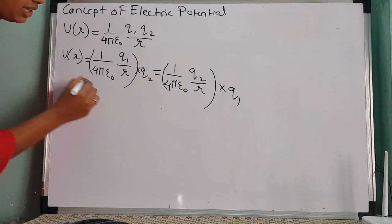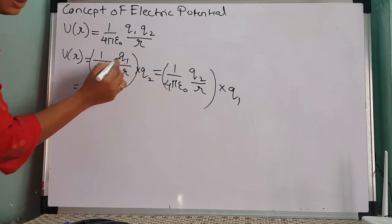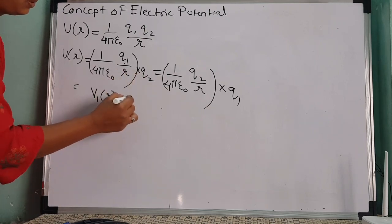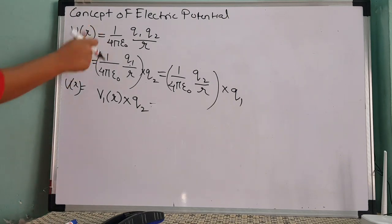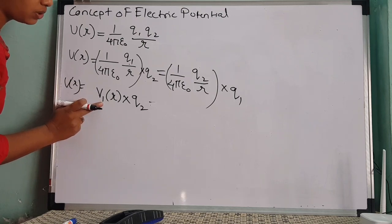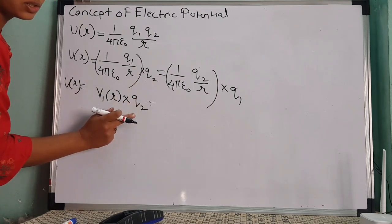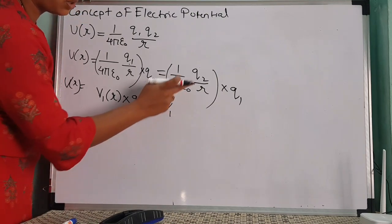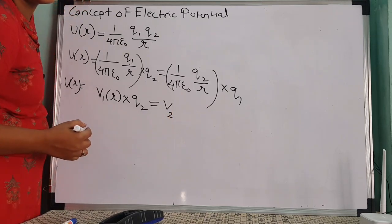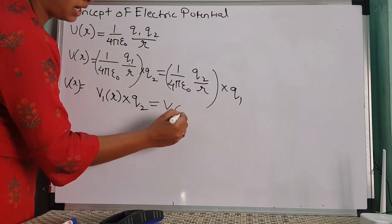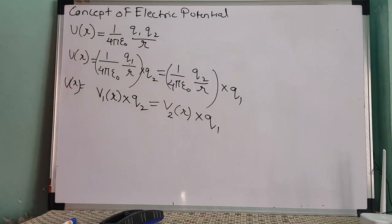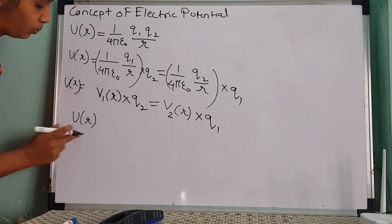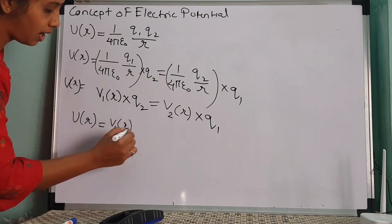We can write this as electric potential on charge Q1 at distance R, multiplied by Q2. Similarly, the formula can be written as electric potential on charge Q2 at distance R, multiplied by Q1. So the potential energy U equals V1(R) times Q2, or equivalently V2(R) times Q1.